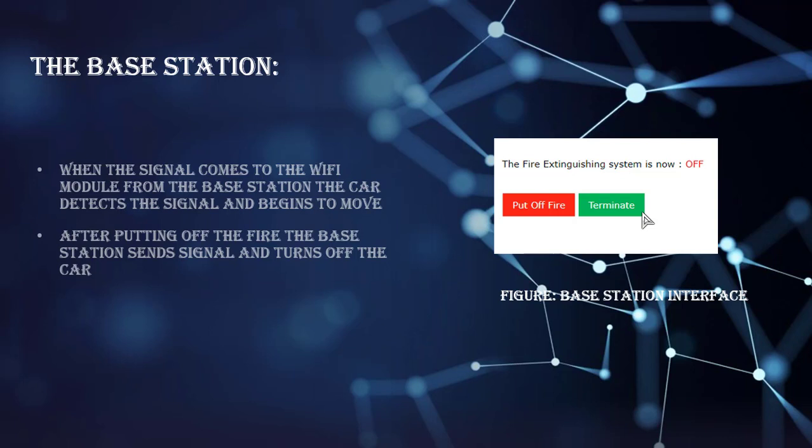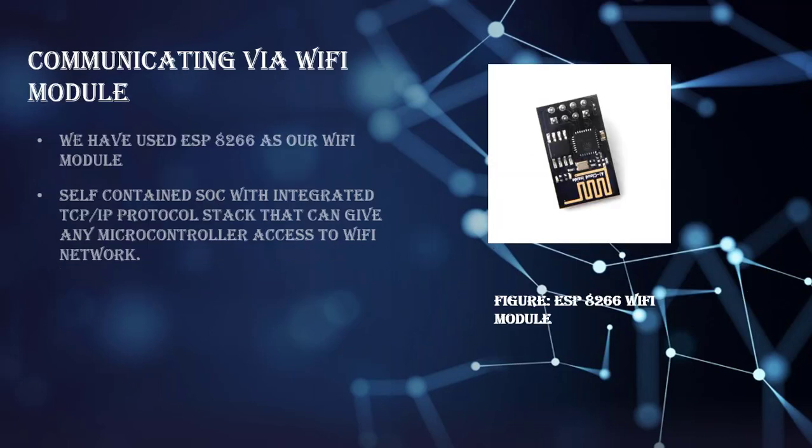When signal comes by Wi-Fi module, our robot will detect the signal and begin to move, and after putting off the fire base station, send signal to fire off. We use ESP8266 Wi-Fi module which creates an URL and can access and control it through internet. It actually receives data from base station and activates our robot for extinguishing fire. Both the server and Wi-Fi module should be connected to the same Wi-Fi module. Now, the later part will explain by another partner Ahmed Imtiaj.